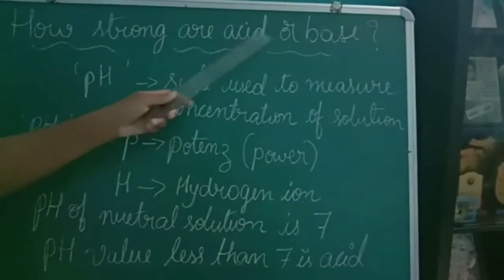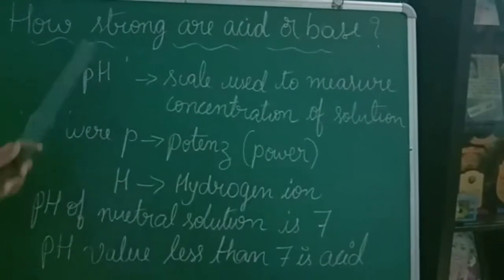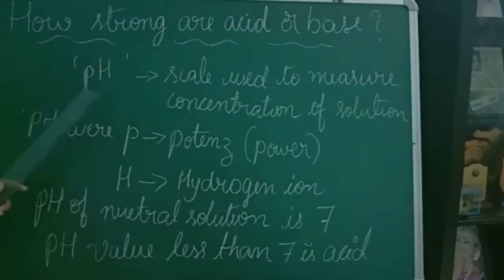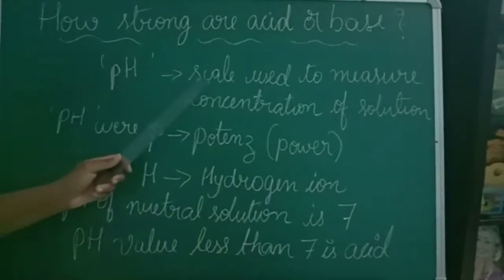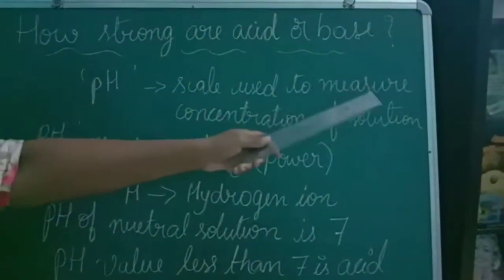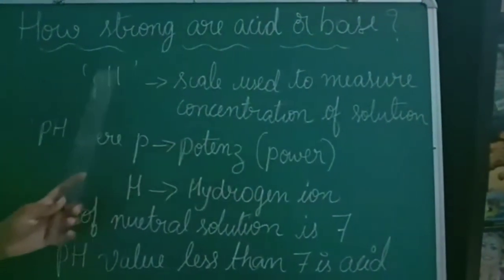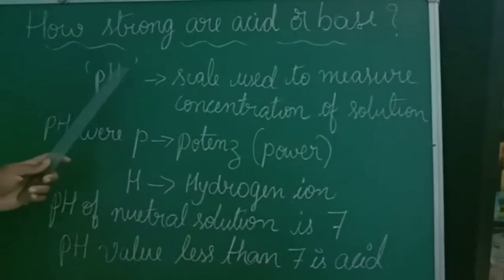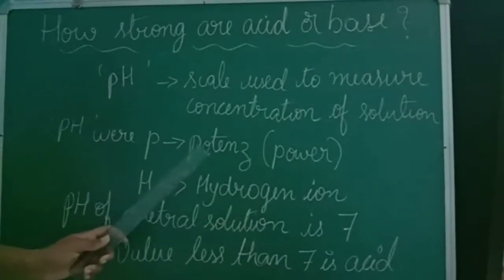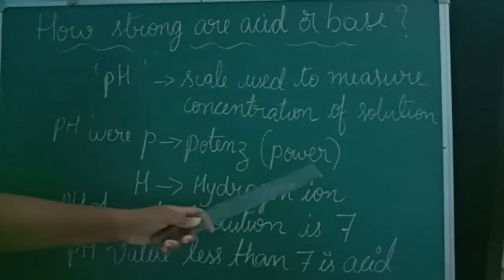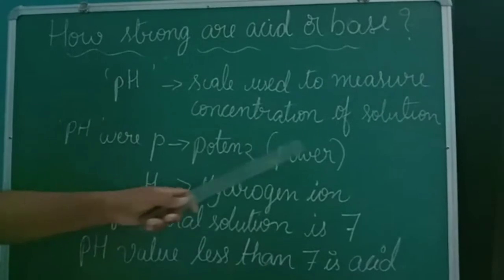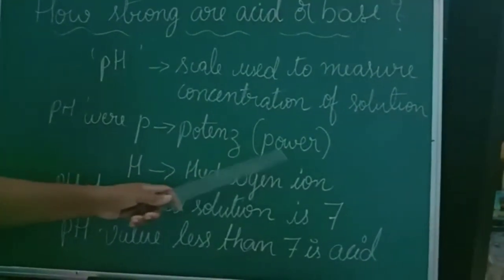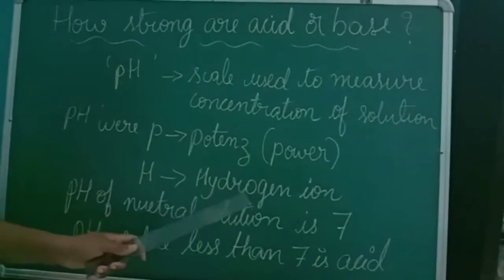Now let us see how strong an acid or base is. By looking at acid or base, we cannot just tell which is strong or which is weak. For that, there is a special scale called the pH scale. The pH scale is used to measure the concentration of solution. In pH, P stands for potence — potence is a German word meaning power — and H stands for hydrogen ion.